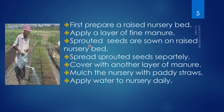Sprouted seeds are sown on the raised nursery bed. To prepare sprouted seeds, take the seeds and soak them in water for 12 to 24 hours. After that, keep them in a warm place for 12 to 48 hours. After the seeds have sprouted, spread them separately on the nursery bed and cover with another layer of manure.